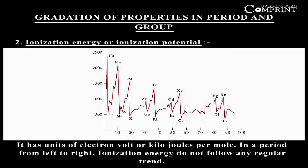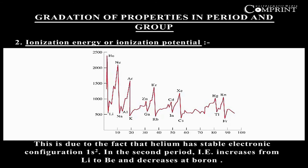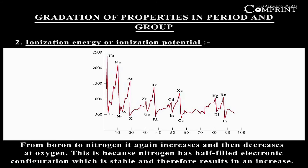In a period from left to right, ionization energy does not follow any regular trend. In the first period, ionization energy increases from hydrogen to helium, due to helium's stable electronic configuration 1s². In the second period, ionization energy increases from Li to Be and decreases at boron. From boron to nitrogen it again increases, then decreases at oxygen, because nitrogen has a half-filled electronic configuration which is stable.